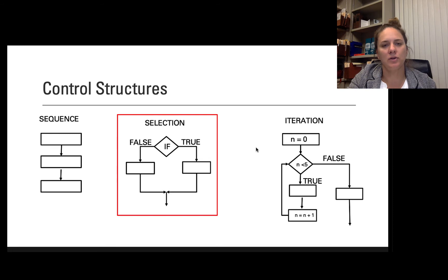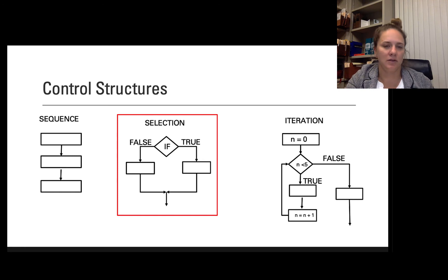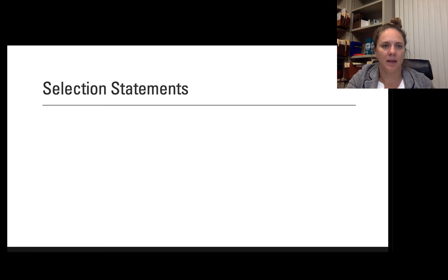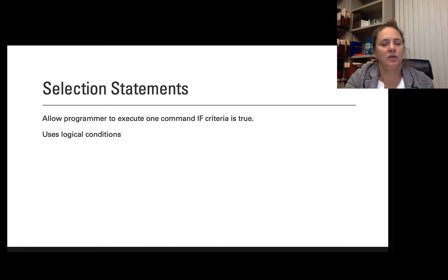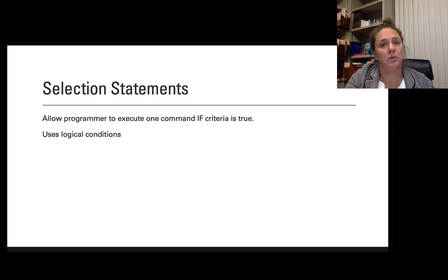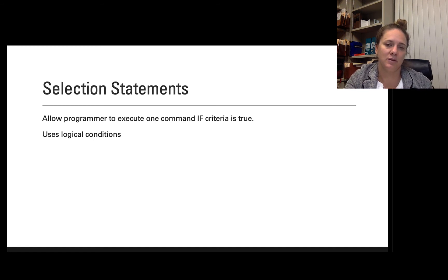This is going to be the general format — it's going to have if statements and then either true or false, but we'll look at different scenarios here. Selection statements allow programmers to execute one command if a particular criteria is true, and then go down a different path if it's false. They use logical conditions, and we're going to focus on how MATLAB deals with logical conditions in my set of videos and slides.